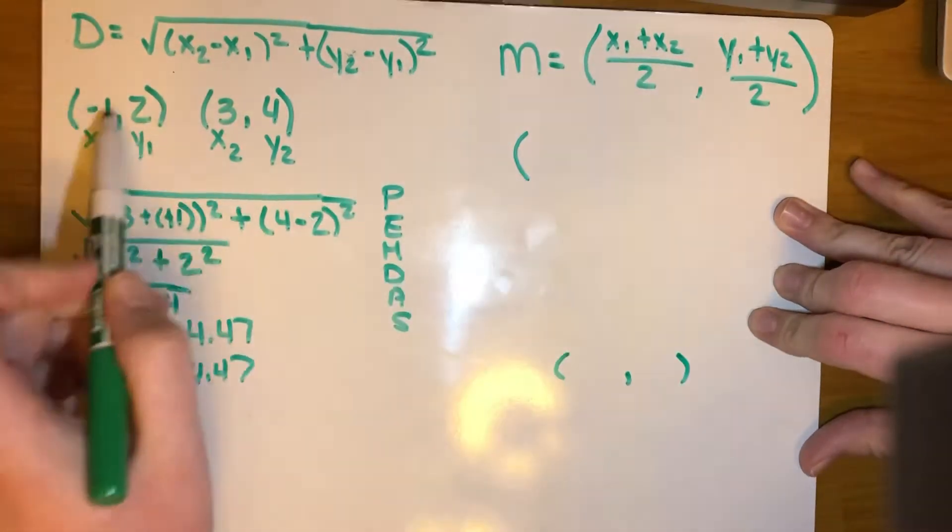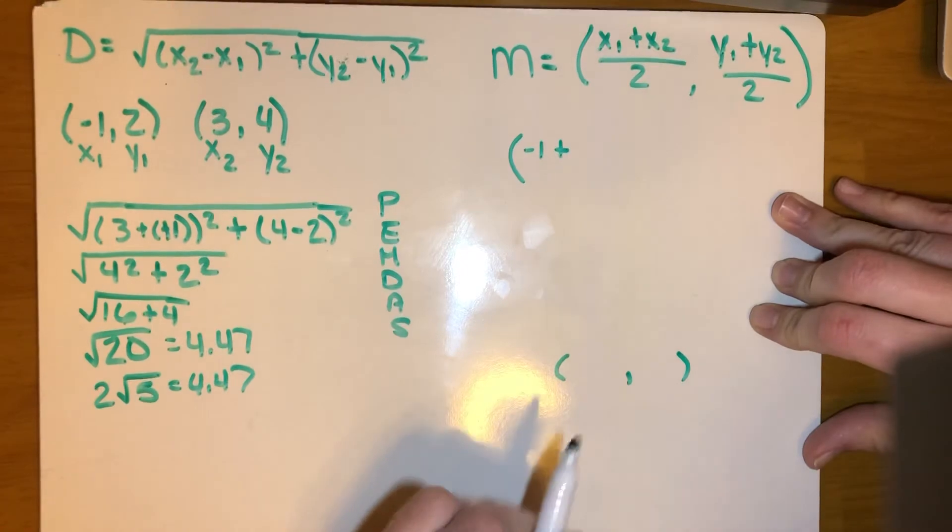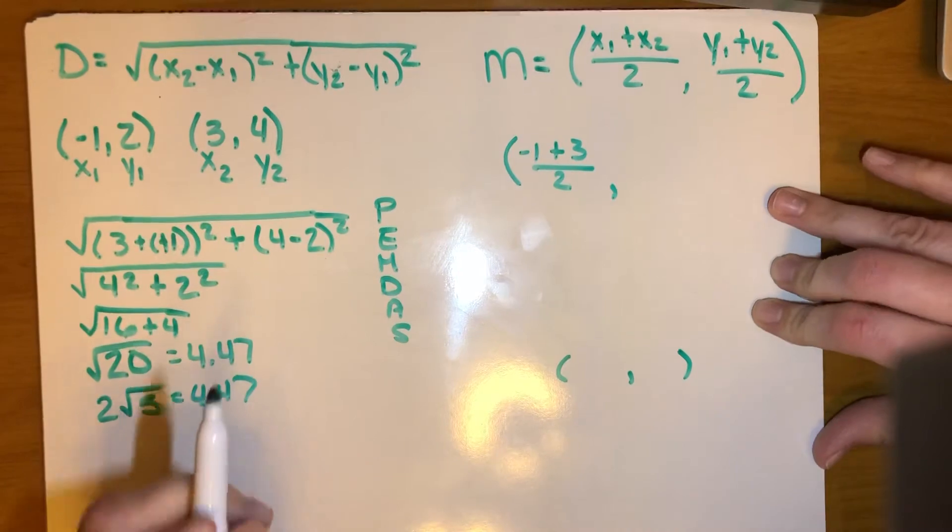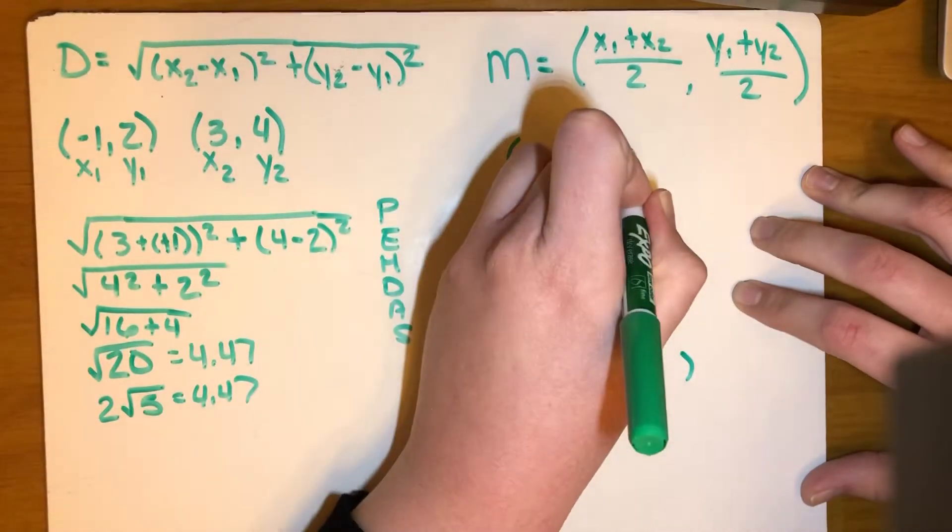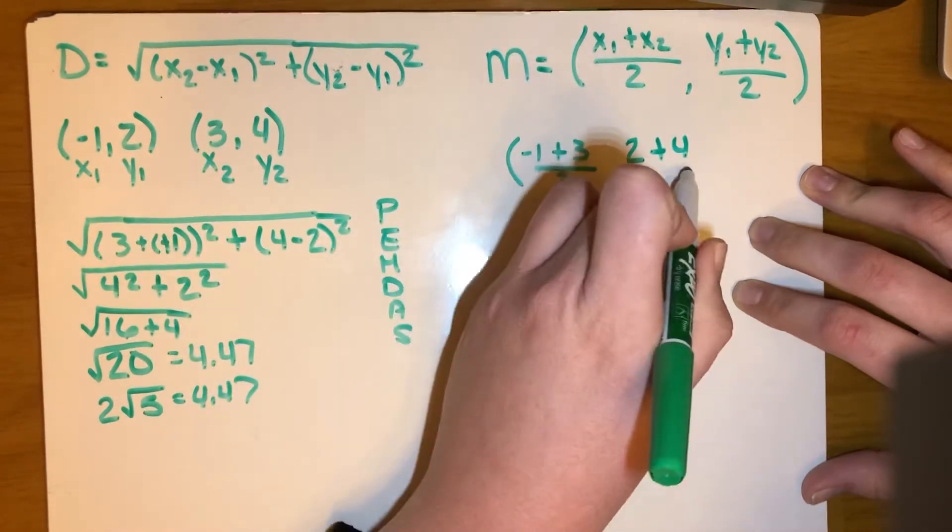So x1 is negative 1, and x2 is 3, that's divided by 2, and then for the y part of the problem, I'm going to do y1, which is 2, plus y2, which is 4.